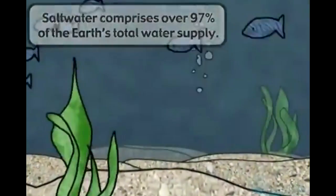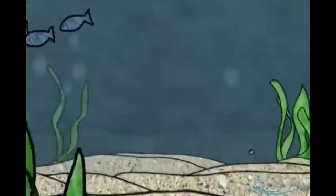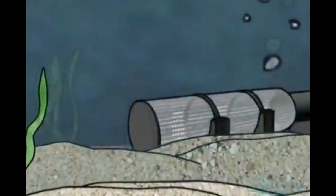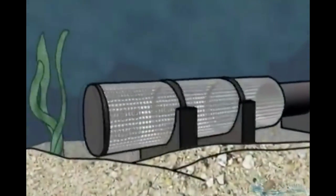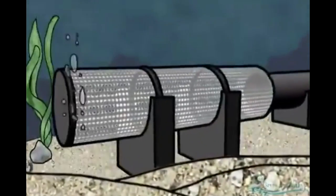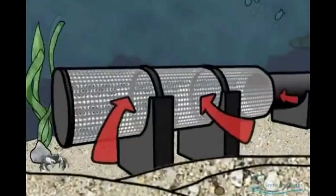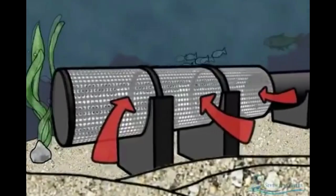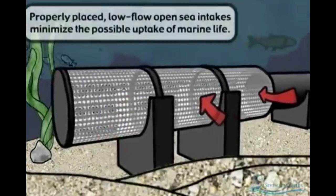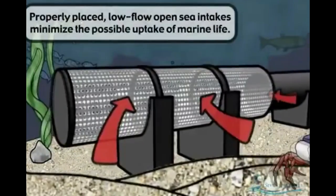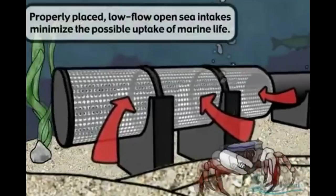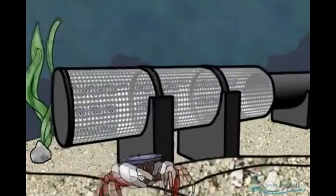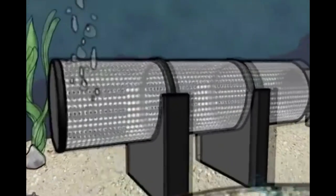Seawater can be economically and reliably converted to potable water through a process known as seawater reverse osmosis. The process starts by extracting water from the ocean using wells located on the shoreline or by using an intake structure located in the open ocean.